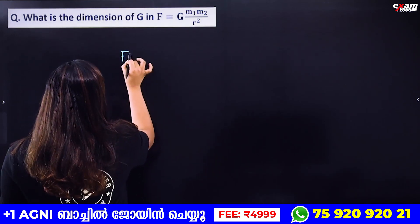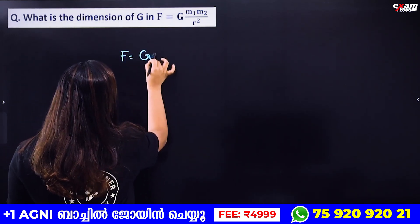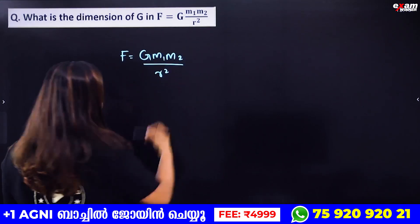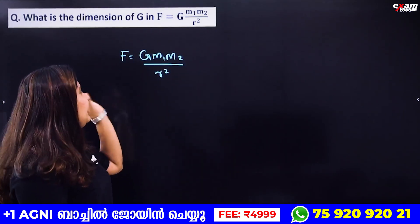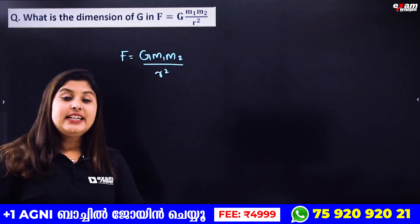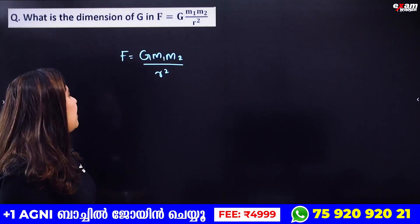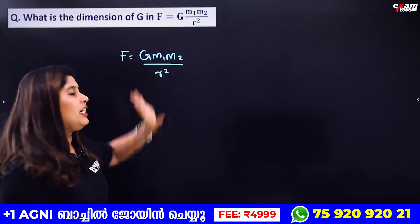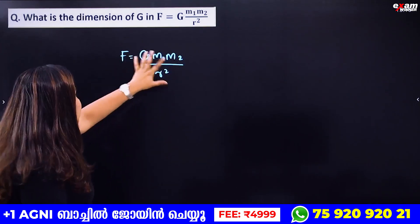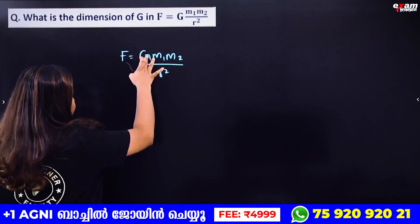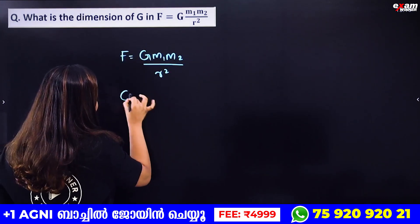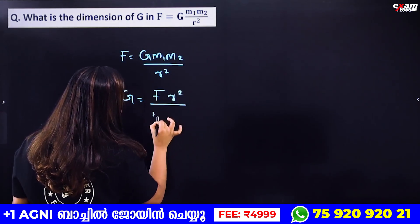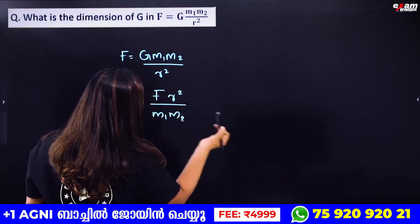We have the equation F = G·m₁·m₂ / r². So G's dimension — we rearrange: G = F·r² / (m₁·m₂).